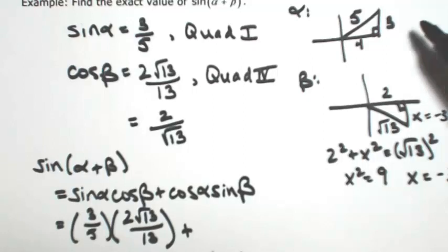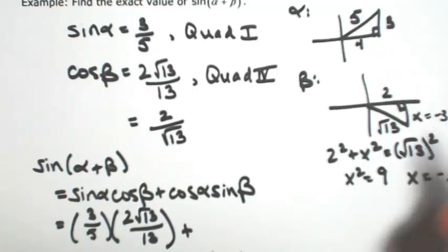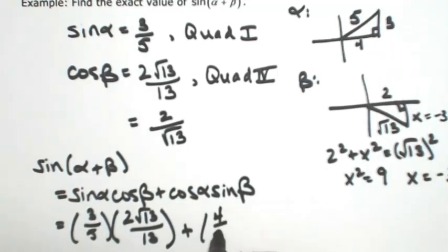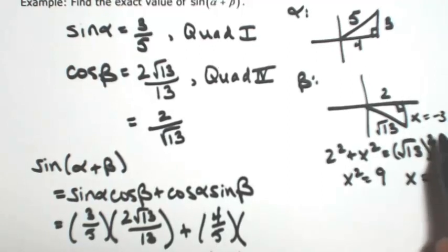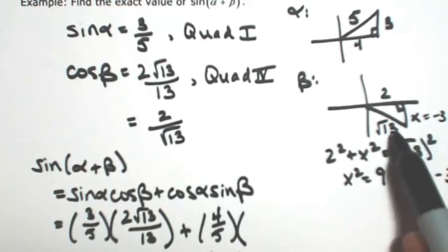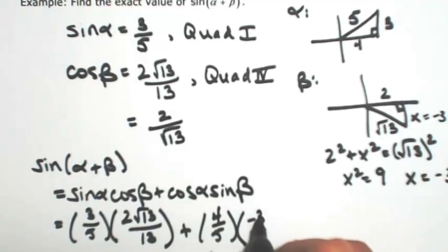And then cosine of alpha from the picture for alpha would be 4 fifths. And then sine of beta from the picture would be negative 3 over root 13. I'll just rationalize that now.